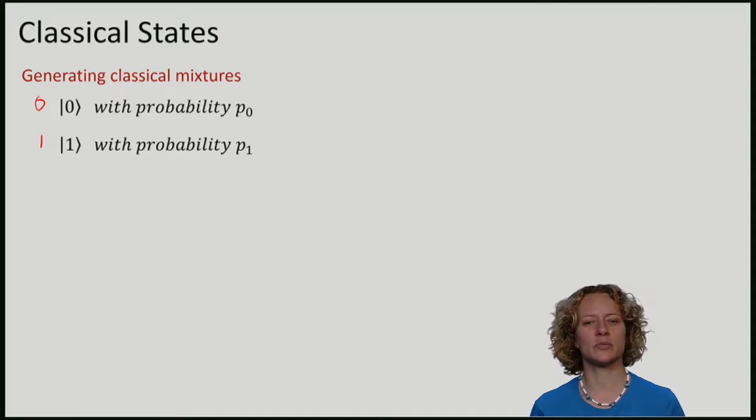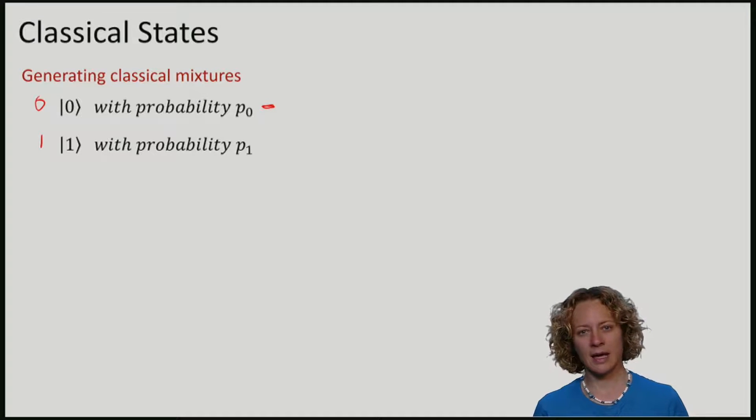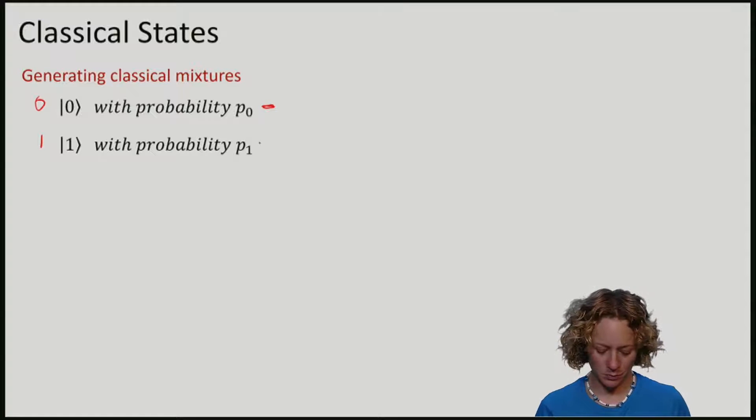So if we think that there is a process that generates bit 0 with probability P0, and bit 1 with probability P1, we can use our rule of computing the density matrix to get the density matrix of this classical process.